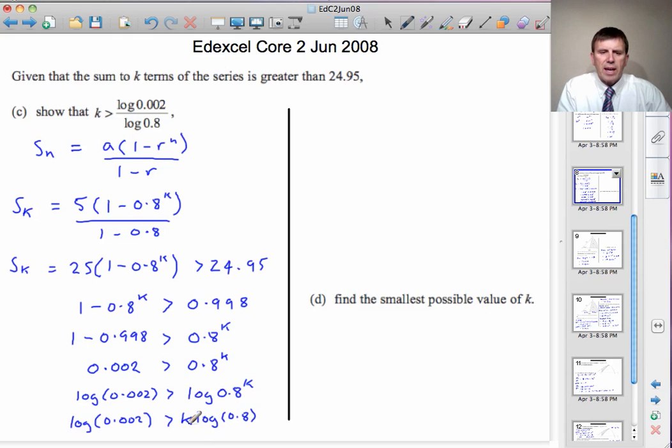So now, to get k on its own, I need to divide through in this inequality by the log of 0.8. But it's important to remember that log 1 is 0 in any base. So the log of a number less than 1, between 0 and 1, is negative. And if I divide an inequality through by a negative number, it reverses the direction of the inequality.